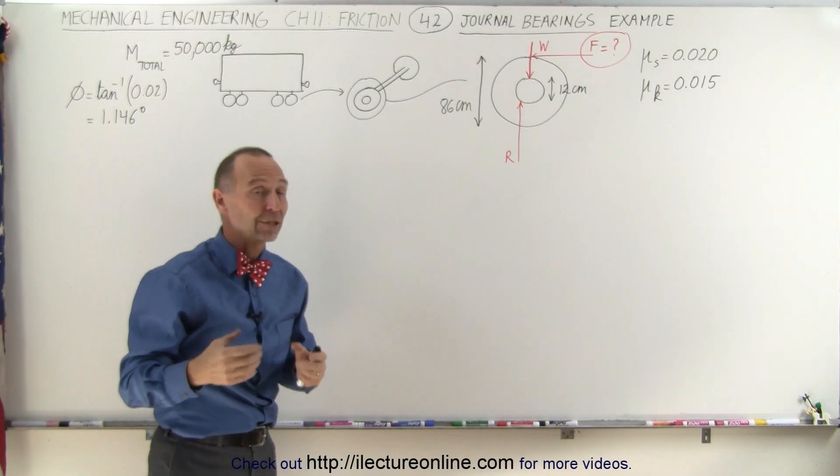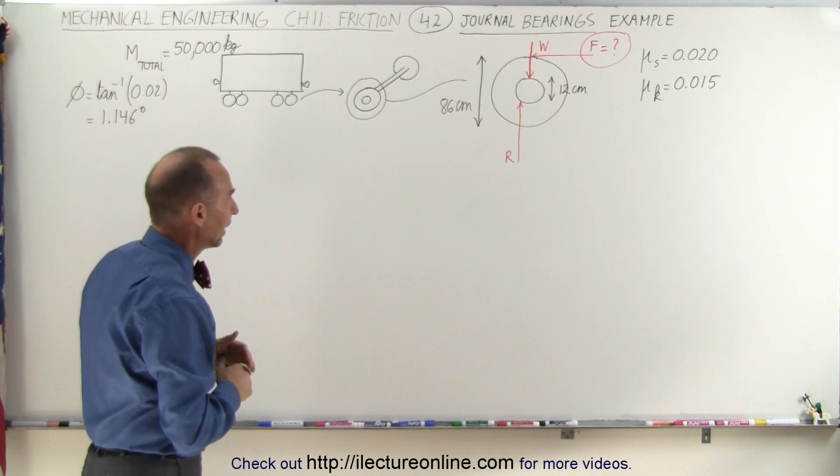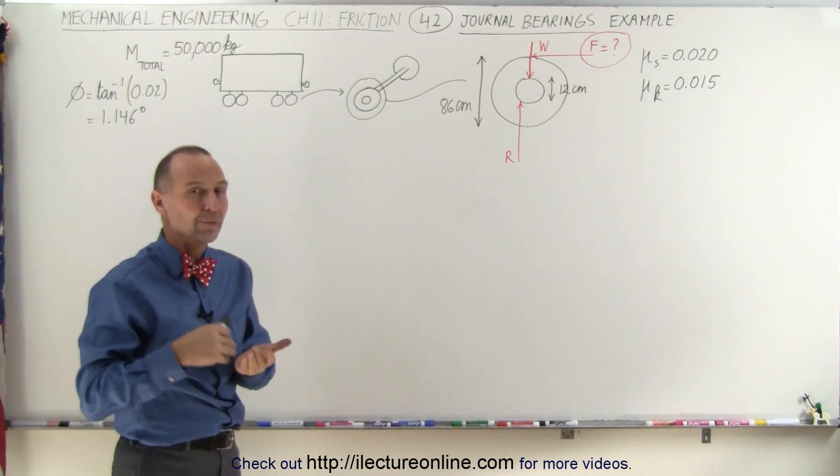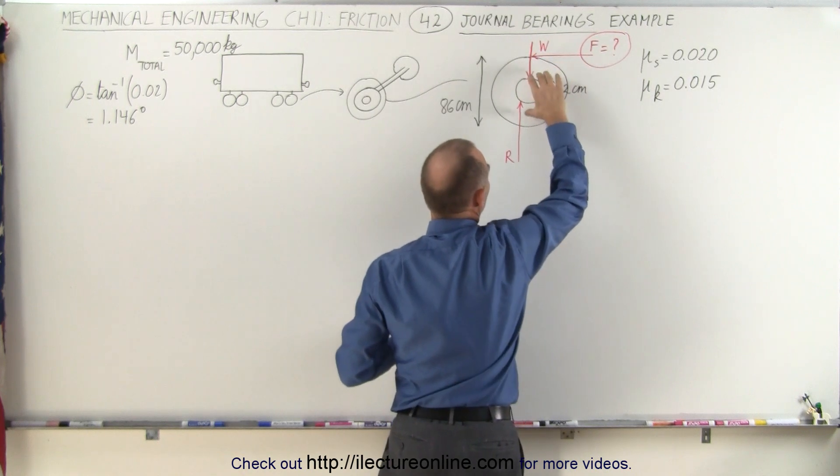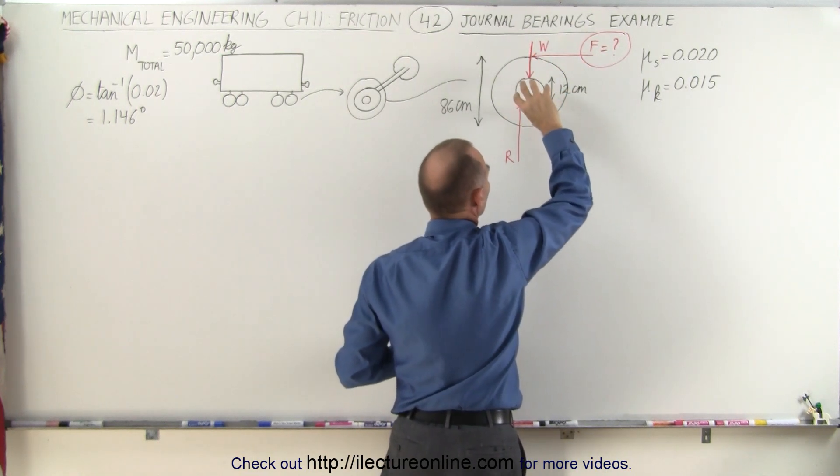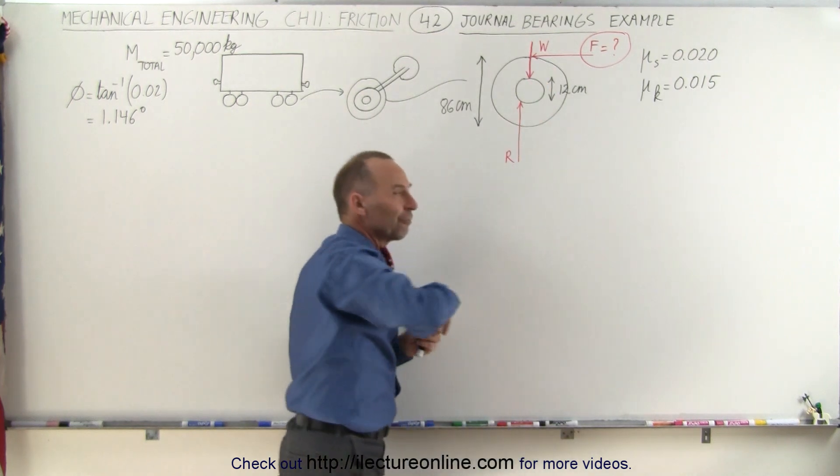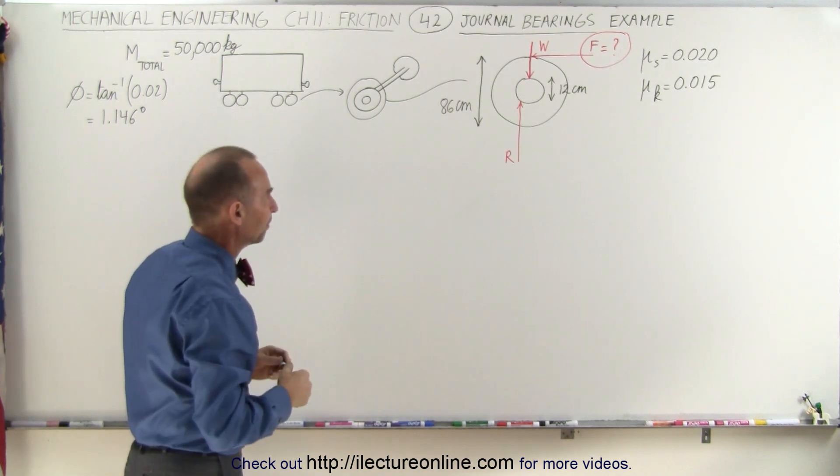Then we'll try to calculate the force required to keep the railroad car moving. In order to do that, we need to sum up the moments because the force applied to the railroad car will result in a moment on the wheel, which results to counterbalance the friction force on the bearing, which is also a moment in the opposite direction.